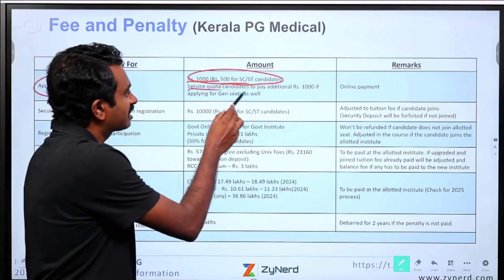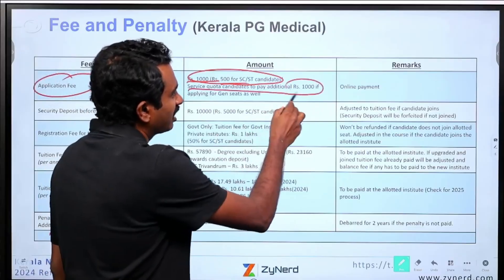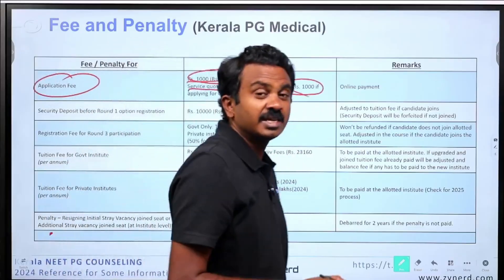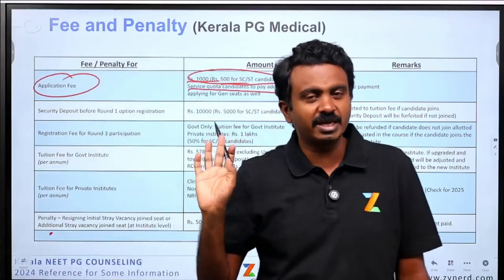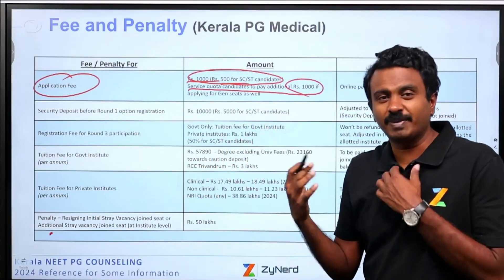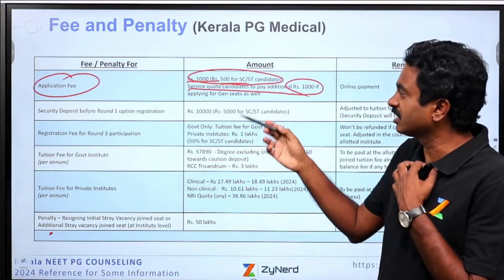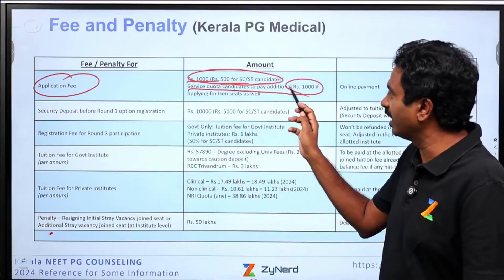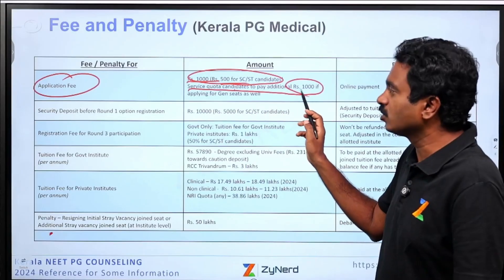Service candidates can pay an additional 1000 rupees in addition to whatever they are paying. If they are also applying for service quota, they will pay 1000.